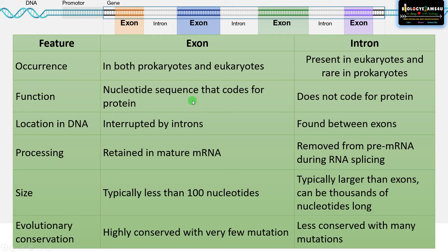Regarding location: exons are interrupted by introns, whereas introns are found between exons. After mRNA processing, exons are retained in mature mRNA, whereas introns are removed from pre-mRNA during RNA splicing by means of the spliceosome complex.